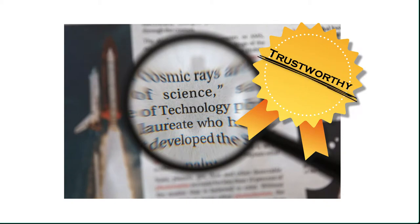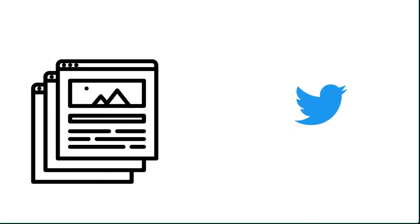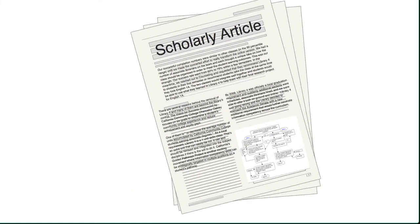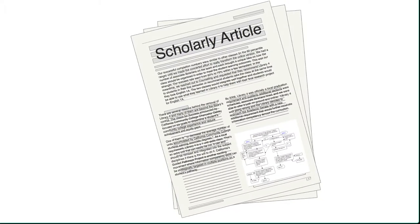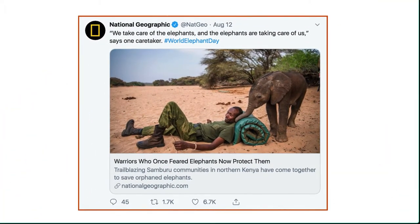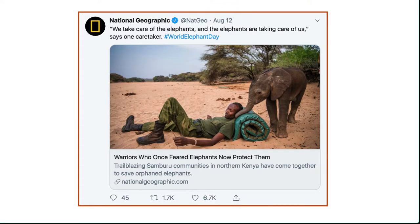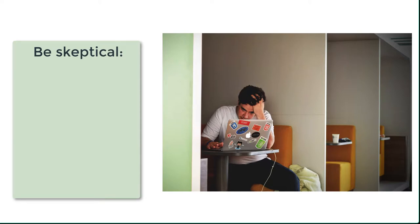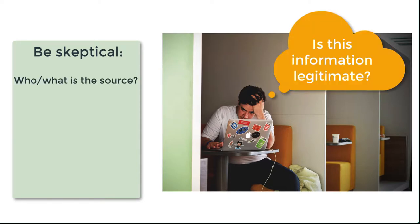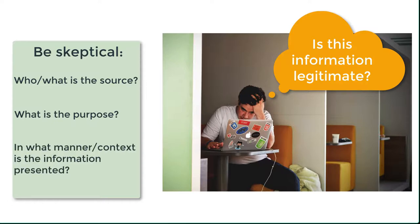Credibility indicates the degree of trust that researchers give to a source. It's important to understand that non-traditional resources such as blog posts and tweets may yield valuable information. While scholarly articles are what we typically think of as credible sources, depending on your context, a tweet from a reputable organization or person may also give you trustworthy and relevant information. It's important to give a healthy dose of skepticism to sources and assess where it came from, what the purpose of the work was, and the context in which the information is presented.